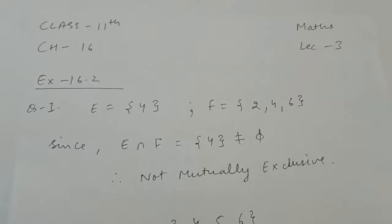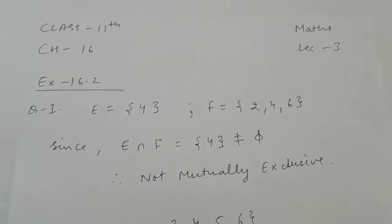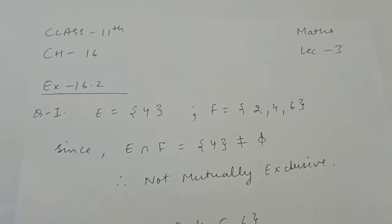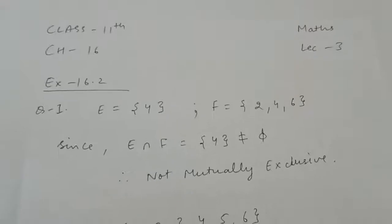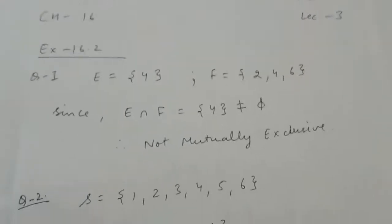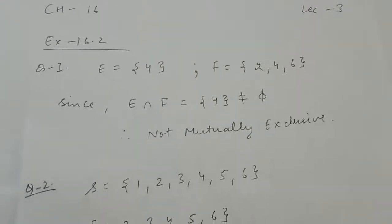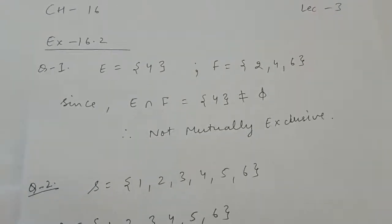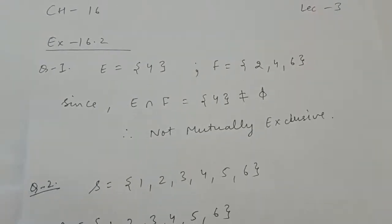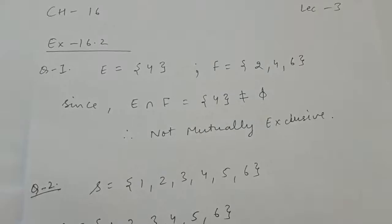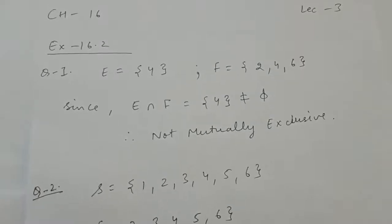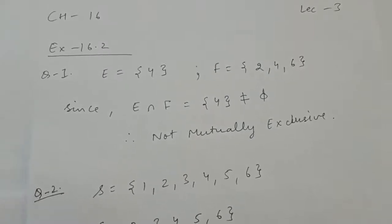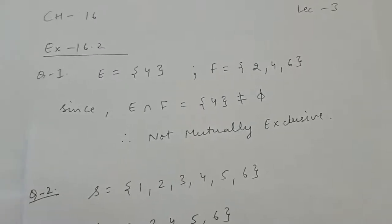Good morning students, this is Class 11 Maths lecture 3 of Chapter 16 Probability. We will do questions of Exercise 16.2. Question number 1: a die is rolled, the event E is the die shows 4.